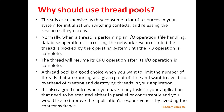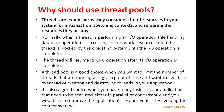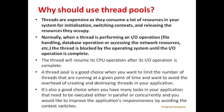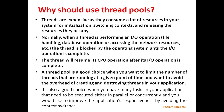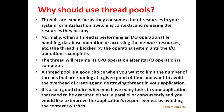Next we'll see why we should use thread pools. Threads are expensive as they consume a lot of resources for initialization, context switching, and releasing the resources they occupy. Normally when a thread is performing input-output operations like file handling, database operations, or accessing network resources, the thread is blocked by the operating system until the operation is complete. A thread pool is a good choice when you want to limit the number of threads running at a given point in time and avoid the overhead of creating and destroying threads. It is also a good choice when you have many tasks that need to be executed in parallel or concurrently and you want to improve responsiveness by avoiding context switching.